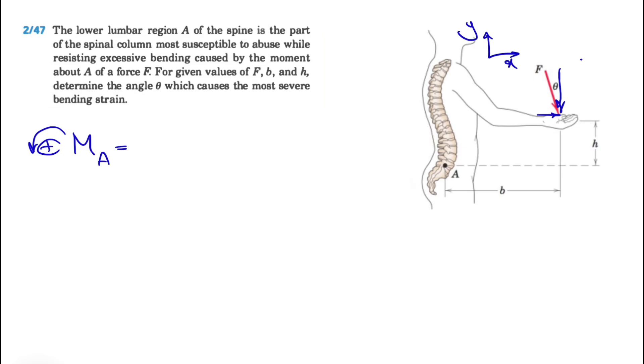The y component would be F times cosine of theta, and the x component will be F times sine of theta. For the moment, we can see that both moments are clockwise, so we have a negative sign. Minus F times cosine of theta for the y component. The distance that we have for r would be b.